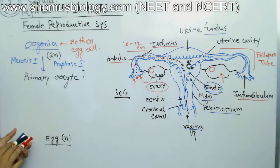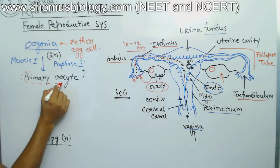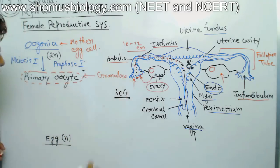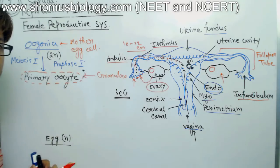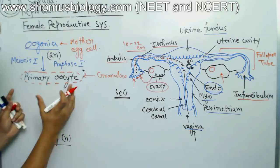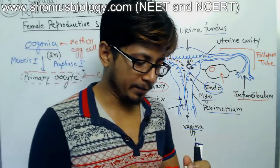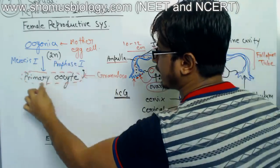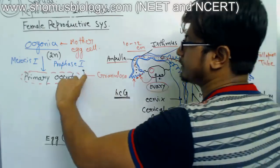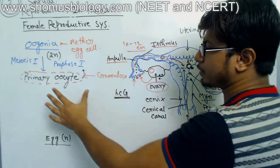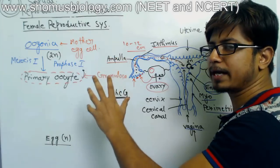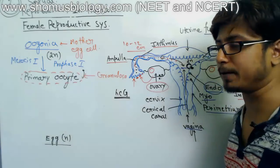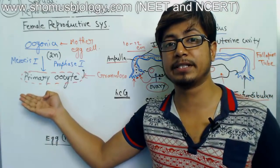The primary oocyte is not present inside the ovary directly — it will be covered by a granulosa layer. Once the primary oocyte is covered with the granulosa layer, it is known as a primary follicle. A follicle is when you have an oocyte covered by granulosa layer, also called a theca — a layer of tissues surrounding the oocyte. The primary follicle remains arrested at prophase 1.